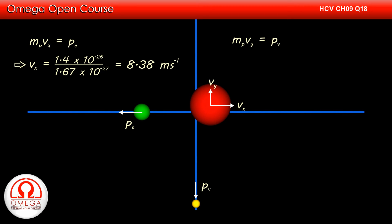Similarly, momentum of proton along y-axis must equal the momentum of anti-neutrino. Or m_p times v_y equals momentum of anti-neutrino, which implies v_y equals 6.4 x 10^-27 divided by 1.67 x 10^-27, which on simplification gives 3.83 meters per second.